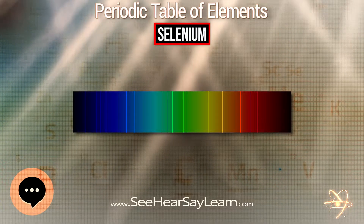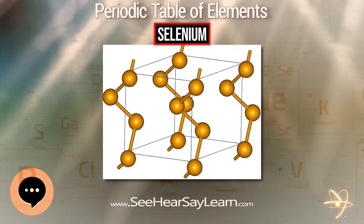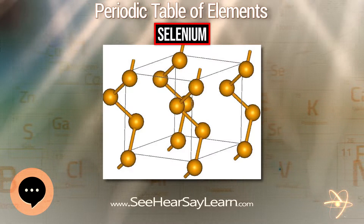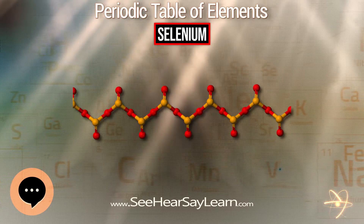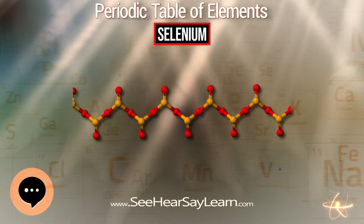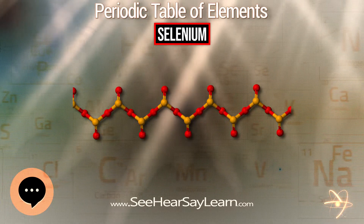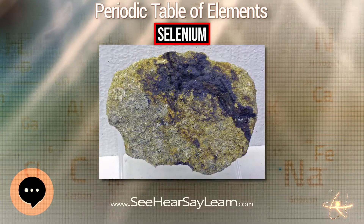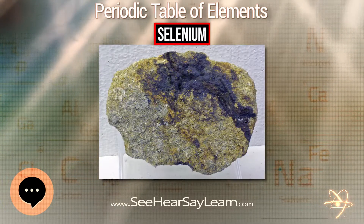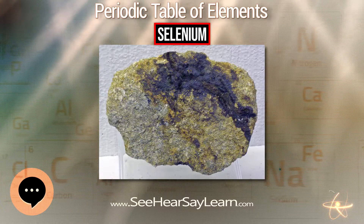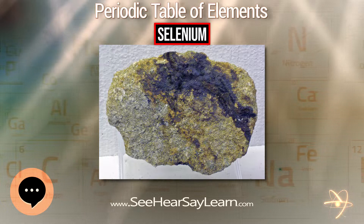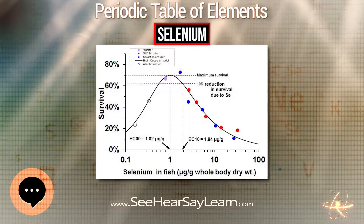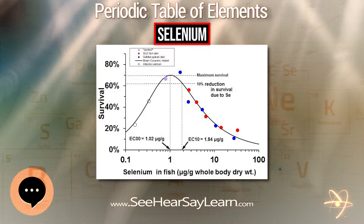Selenium trioxide may be synthesized by dehydrating selenic acid H2SeO4, which is itself produced by the oxidation of selenium dioxide with hydrogen peroxide. Hot concentrated selenic acid can react with gold to form gold selenate. Iodides of selenium are not well known.